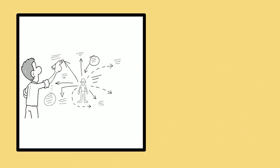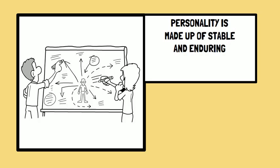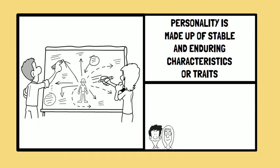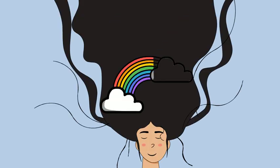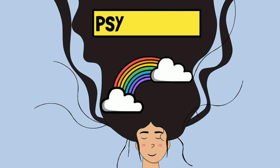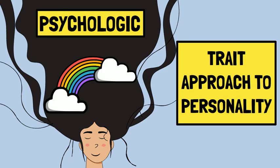The trait approach to personality is one of the most widely used and accepted models in psychology. This approach argues that personality is made up of stable and enduring characteristics, also known as traits. It suggests that people differ from one another in terms of these traits, which in turn shapes their behavior and responses to different situations. Hi guys, welcome back to this channel. I am Akanksha from Psychologic, and today's topic is the trait approach to personality.